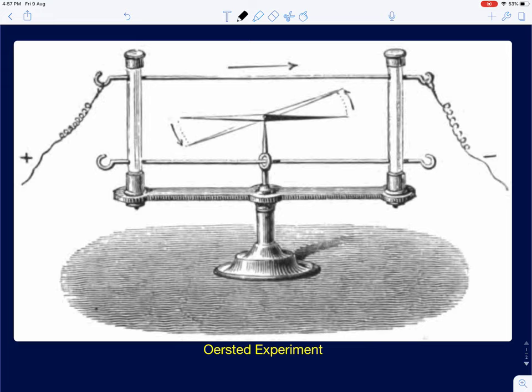An inductor is also an energy-storing element like a capacitor. A capacitor stores electrical energy and an inductor stores magnetic energy. Now, until the early 1800s, electricity was understood as a separate field of science. We understood how to store electrical energy — batteries were already developed in a crude form — and magnetism was a separately evolving field. One practical application of a magnet was the compass needle used for navigation at sea.